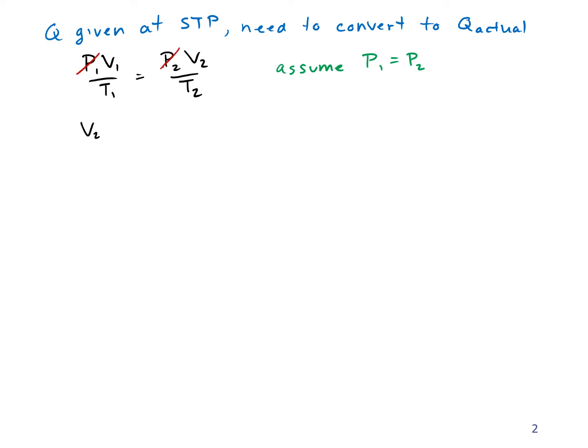Now I'm going to solve for V2, which equals V1 times T2 over T1. So that's a volume. The flow rate Q is just a volume per time, so I can divide everything by time and say that Q2 equals Q1 times T2 over T1.